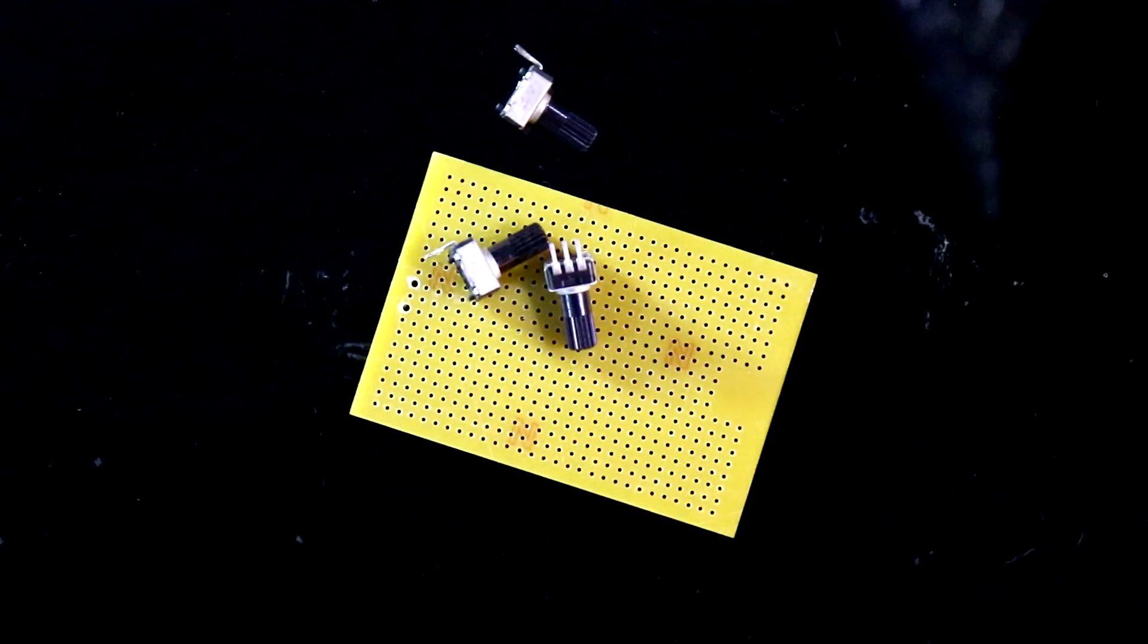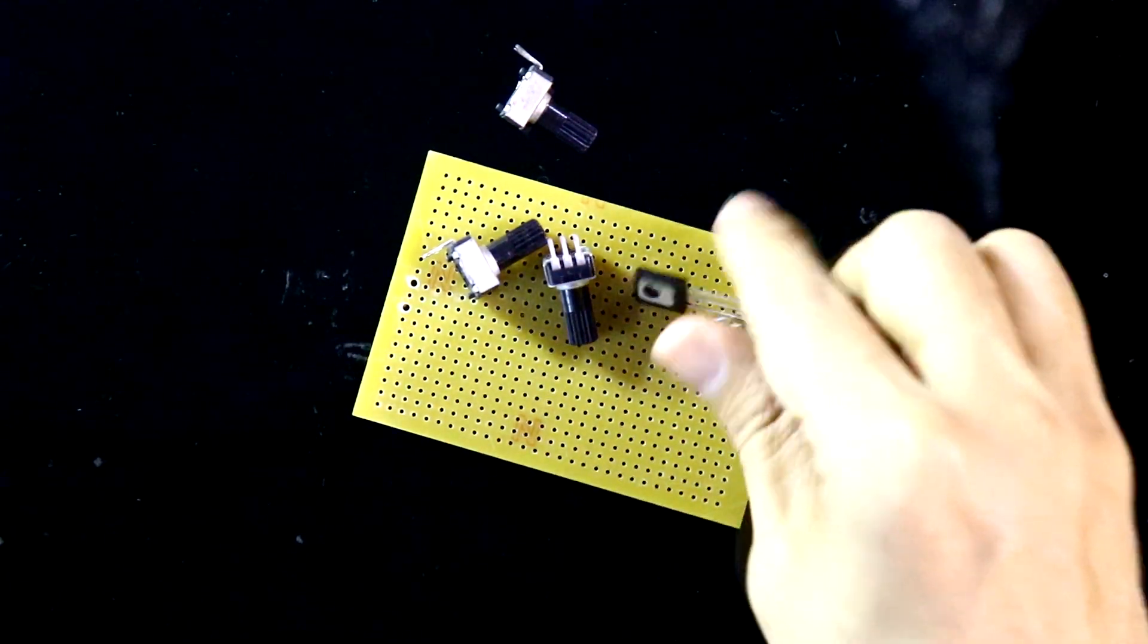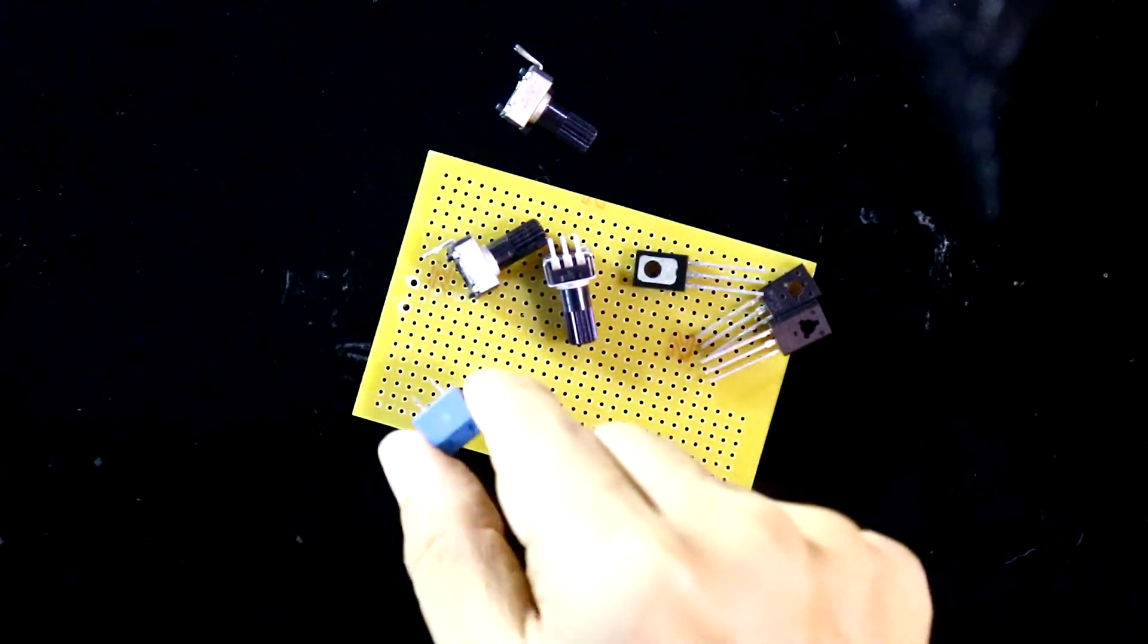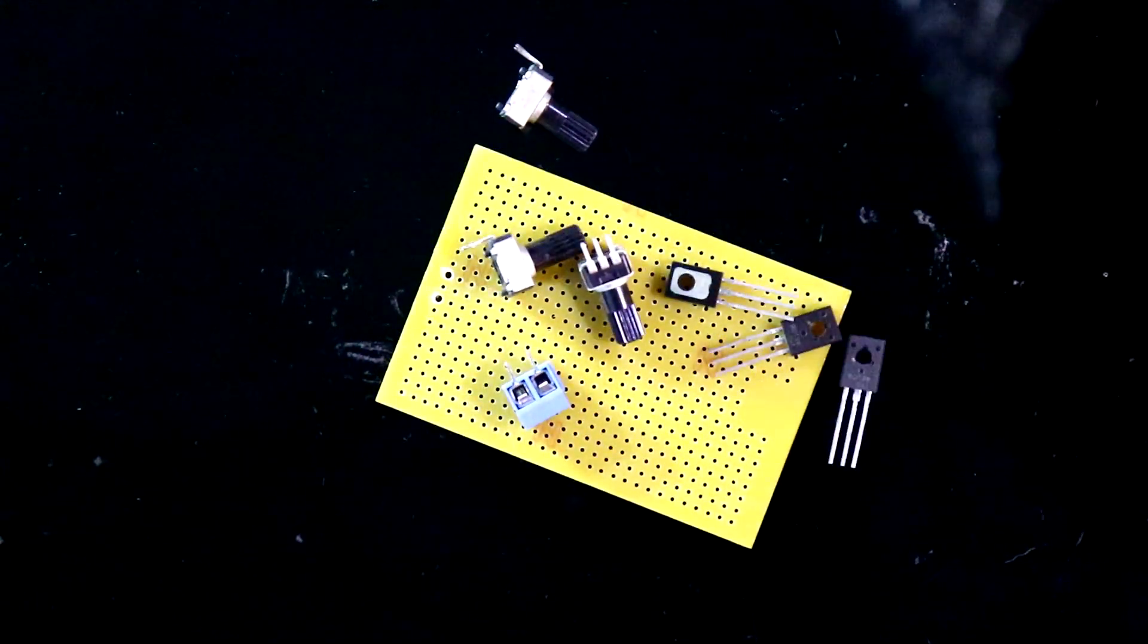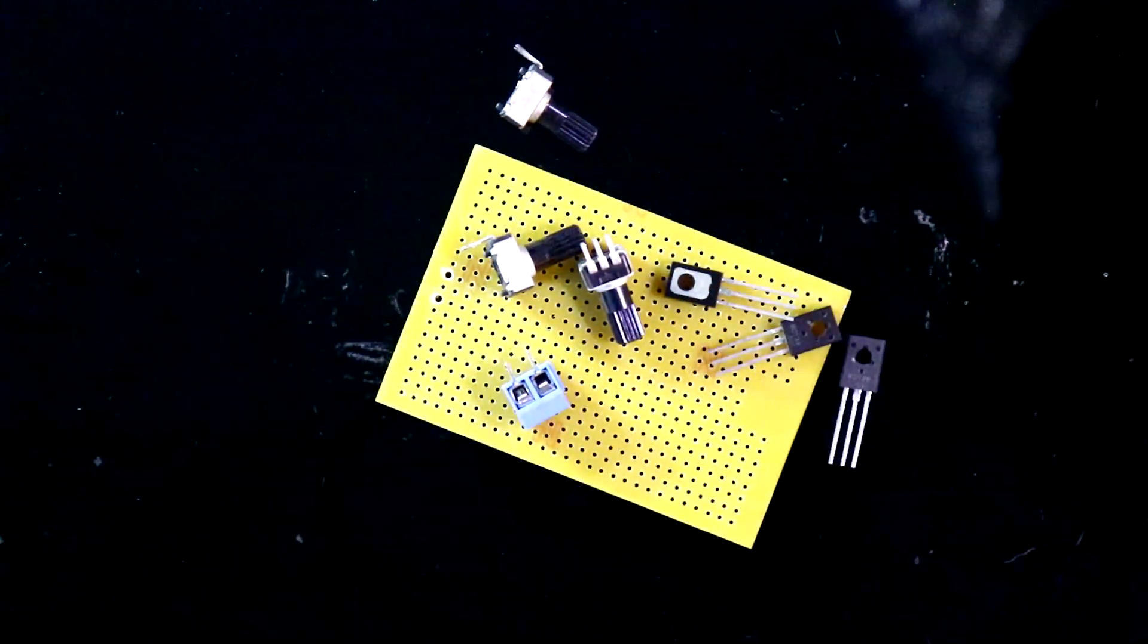These are 10 kilo ohms potentiometers, BD139, and here I'll connect the 12 volt power supply. Now I'll solder them according to the circuit diagram.